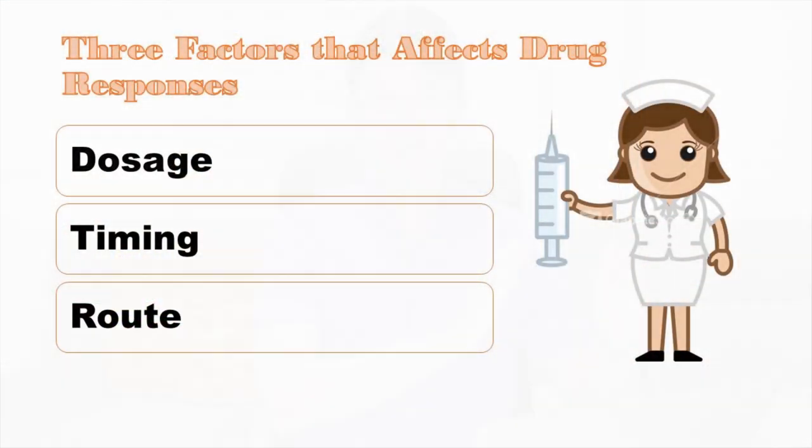You also have your medications depending on their site of insertion. You have your ophthalmic medication, which are medications applied in your eyes or optic area, as well as your otic medications, which are medications directly applied through your ears. In order for us to understand how different medications affect our body, we should first discuss the three factors that basically affect drug responses. You should remember the acronym D, T, and R — which means dosage, timing, and route.